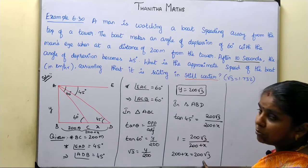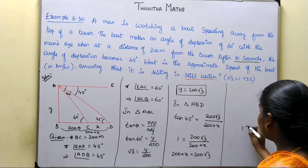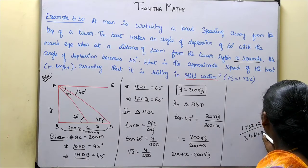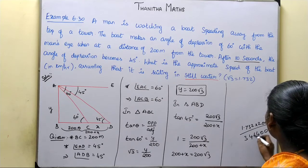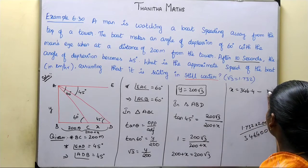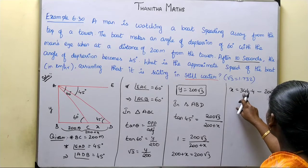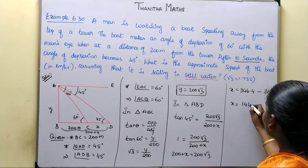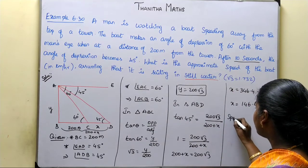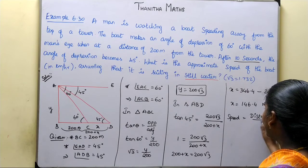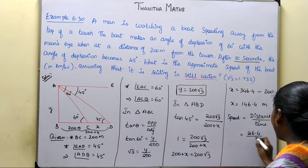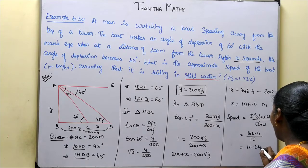Now we calculate: x equals 200 root 3 minus 200. Since root 3 is approximately 1.732, we get 200 times 1.732 equals 346.4. So x equals 346.4 minus 200, which gives x equals 146.4 meters. Speed equals distance divided by time, so speed equals 146.4 divided by 10, which equals 14.64 meters per second.